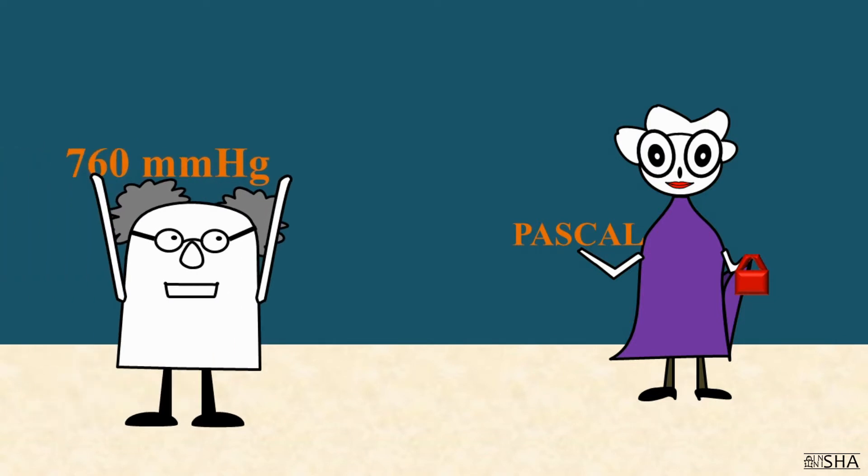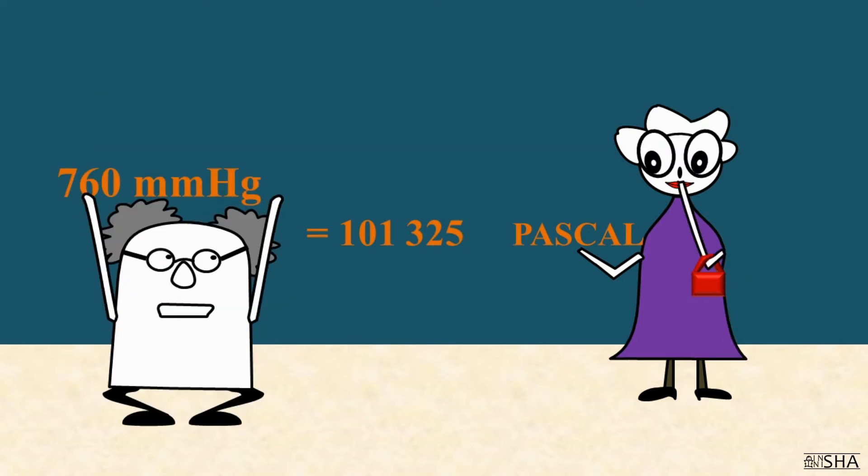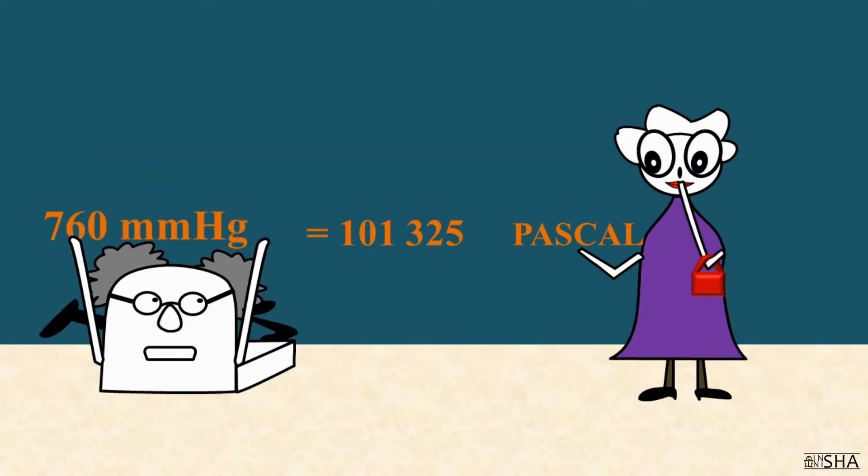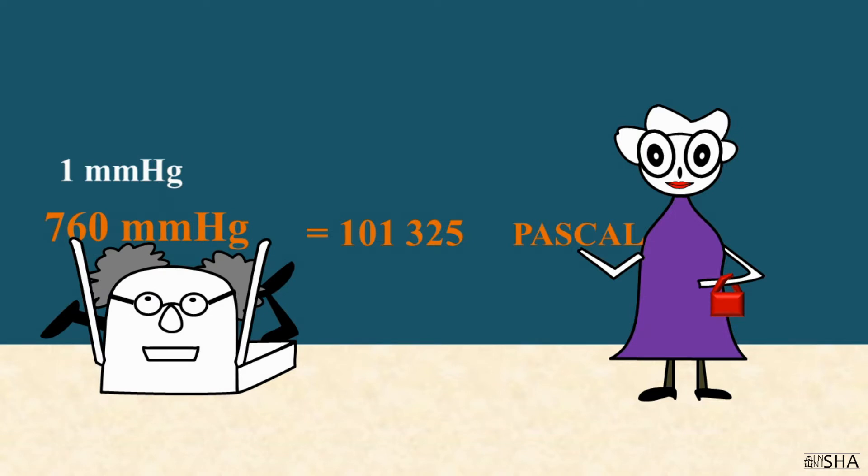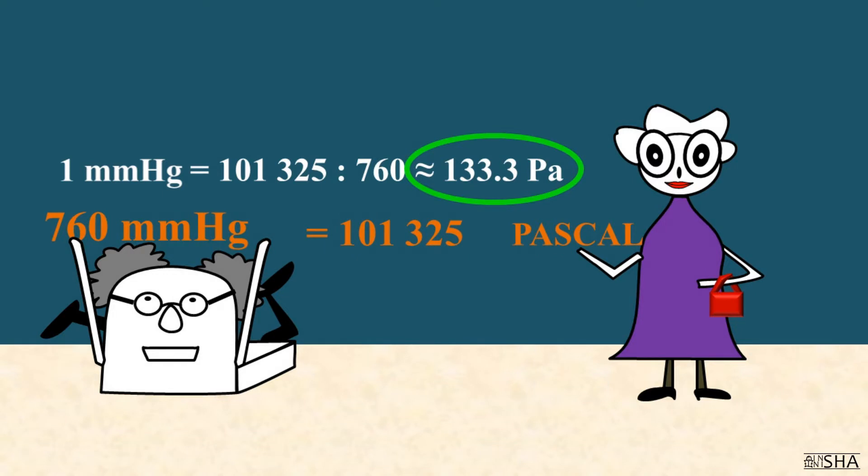760 mm of mercury equals 101,325 pascals. Therefore, we can easily calculate that 1 mm of mercury is approximately 133.3 pascals. What a pretty number. It isn't hard to remember it.